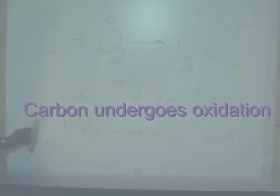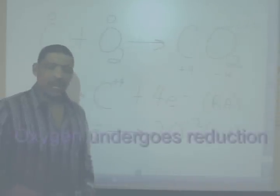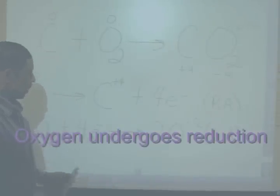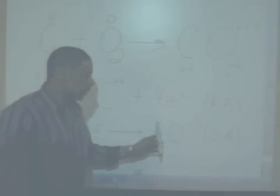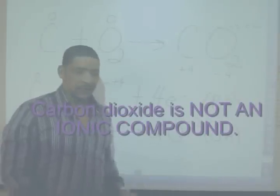Oxygen begins with a zero charge and ends with a negative two charge. So oxygen has undergone reduction. However, in this case, oxygen must gain four electrons to produce two oxygen atoms or ions with the negative two charge.